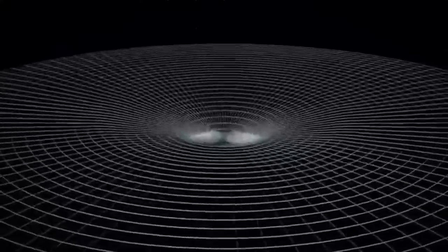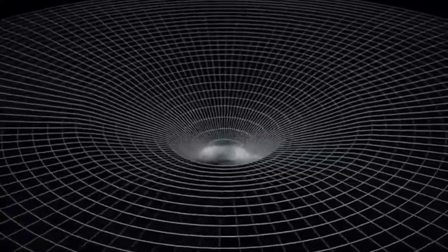To understand general relativity, think of the universe as a four-dimensional entity, combining three dimensions of space and one of time. Massive objects like stars and planets cause the fabric of space-time to curve around them, which we perceive as gravity.